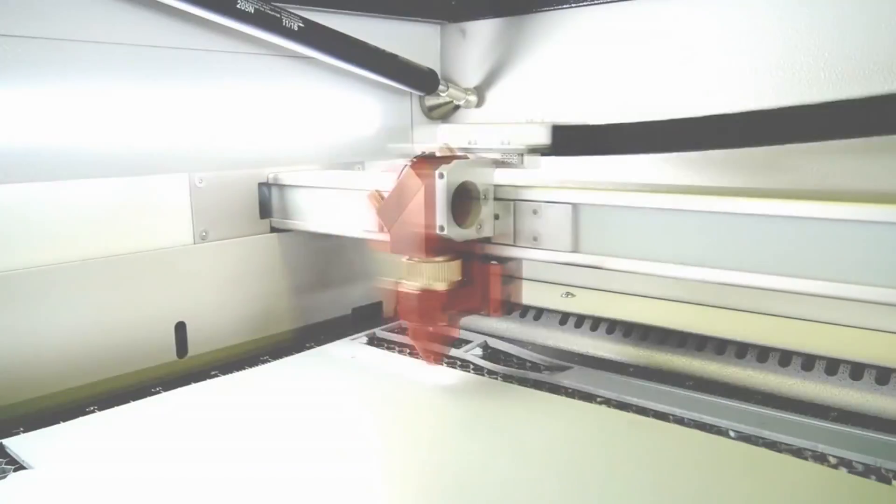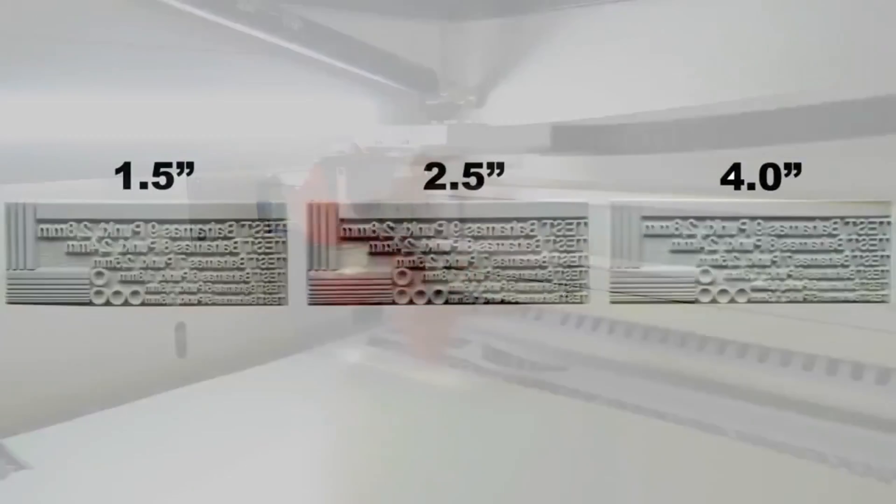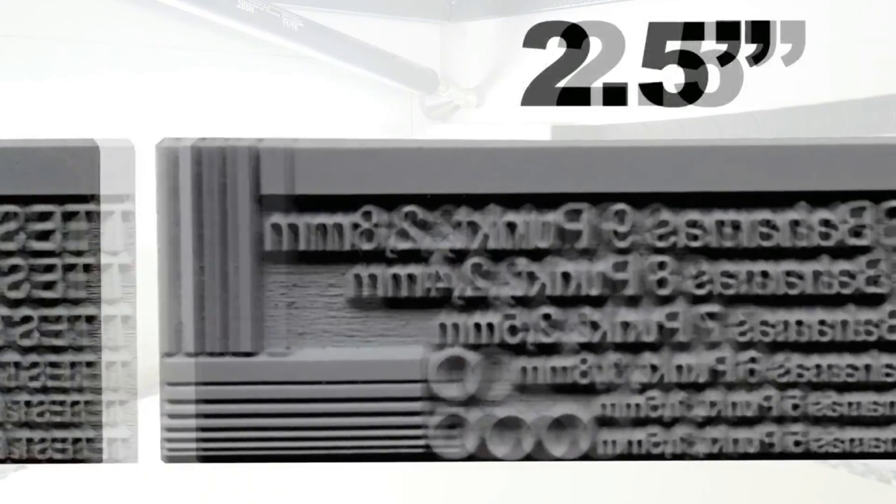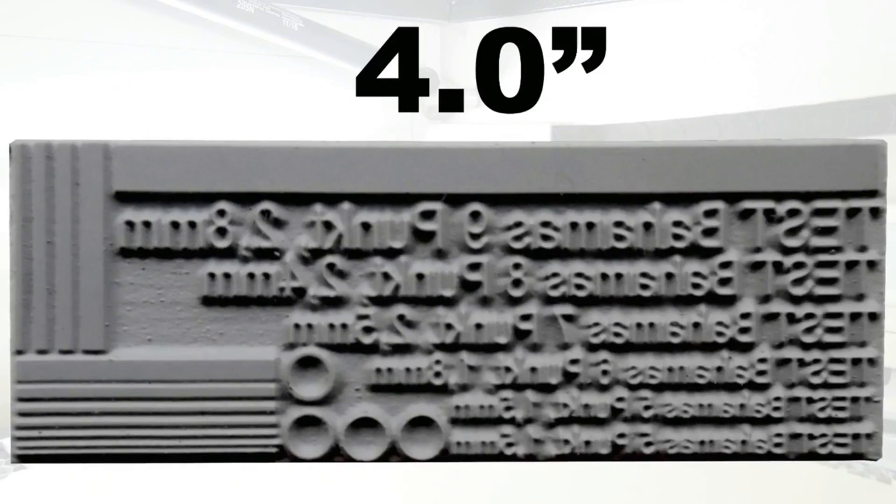Now let's do the same test on a piece of rubber. We can see the results on three pieces of rubber, and it looks like the 1.5-inch lens is able to produce the clearest engraving in the areas where we have the smallest details. In contrast, the 4-inch lens test doesn't look as good. It appears bold and undefined.